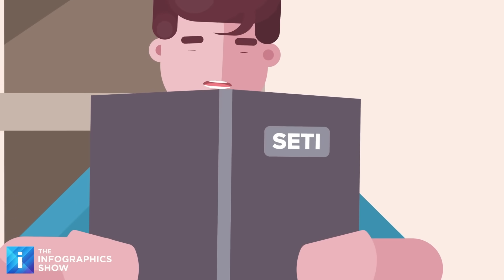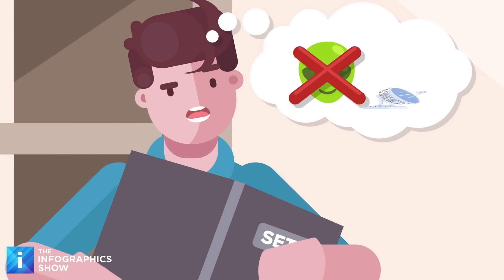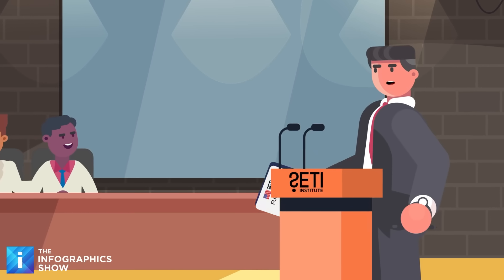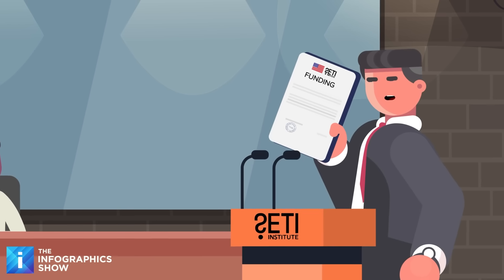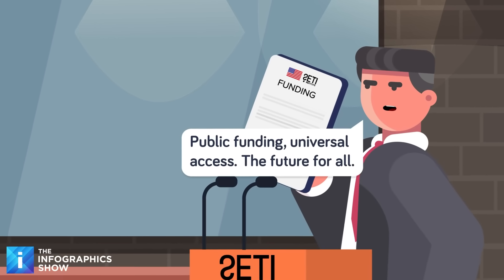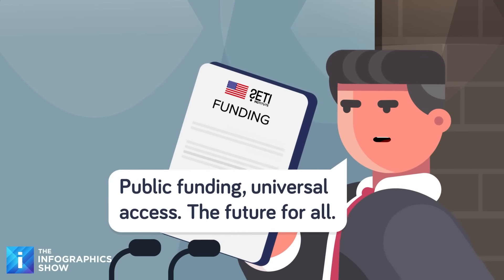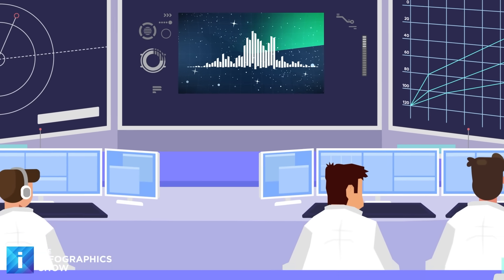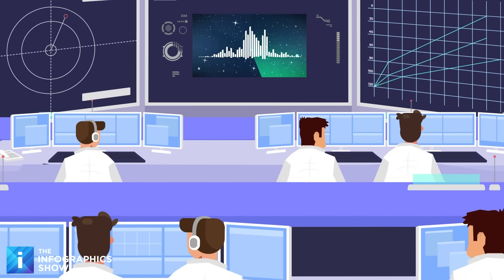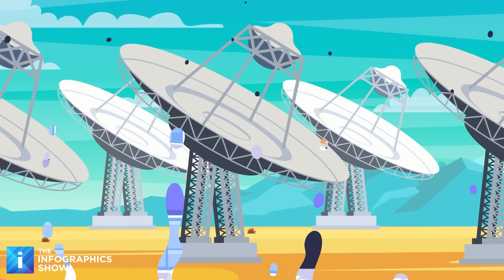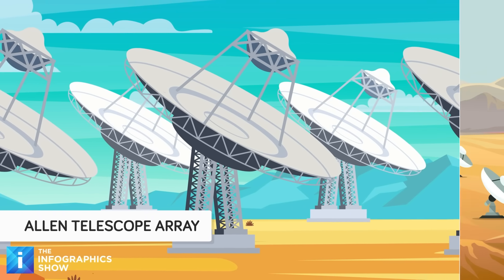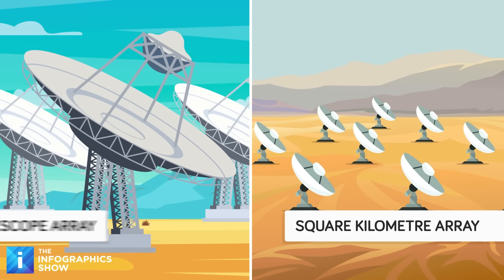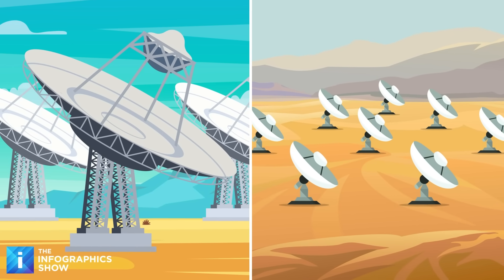The wow signal transformed SETI from a fringe pursuit into legitimate science, inspiring a new generation of telescopes and listening programs. Suddenly universities were funding radio astronomy projects, and governments were taking the search seriously. Scientists around the world were downloading software to help analyze cosmic signals from their home computers. The signal pushed radio astronomy into the digital age. Dr. Krauss' primitive printouts gave way to sophisticated computer systems that could process thousands of signals simultaneously. Modern telescopes like the Allen Telescope Array and the upcoming Square Kilometer Array exist partly because a 72-second mystery convinced the world we needed better tools to listen to the cosmos.